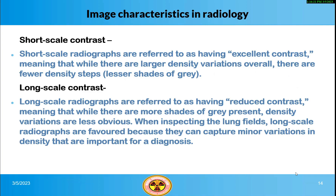Short-scale radiographs are referred to as having excellent contrast, meaning that while there are larger density variations overall, there are fewer density steps and lesser shades of gray. Long-scale radiographs are referred to as having reduced contrast, meaning that while there are more shades of gray present, density variations are less obvious. When inspecting the lung fields, long-scale radiographs are favored because they can capture minor variations in density that are important for a diagnosis.